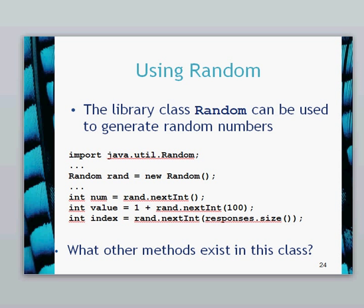On the third line here, this is the one we're going to be using: int index equals rand.nextInt. The clever bit is we don't want to have a random number bigger than the biggest index in the responses ArrayList. So we're going to call the responses.size method. Therefore, we're definitely not going to get an index which is bigger than the biggest index in the ArrayList.